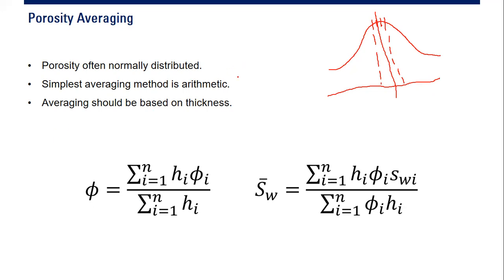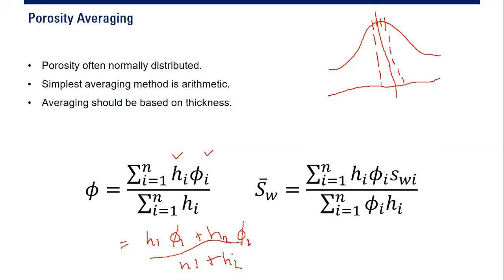The arithmetic average porosity formula is: the summation of (thickness × porosity) for each layer, divided by the summation of thickness. For example, with two samples: (h₁ × φ₁ + h₂ × φ₂) / (h₁ + h₂). This accounts for different layer thicknesses and porosities.